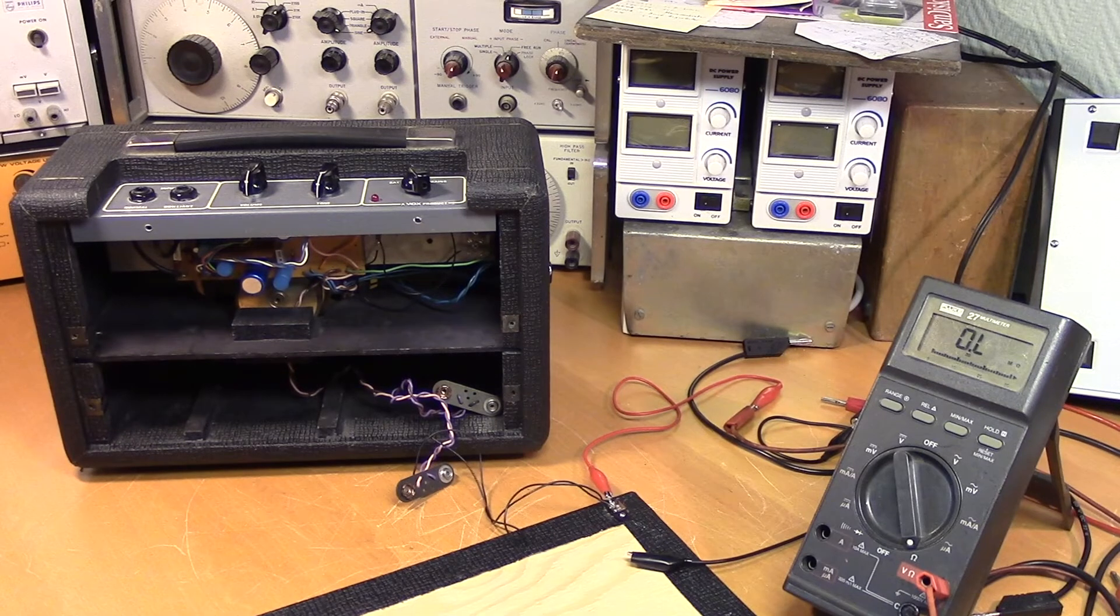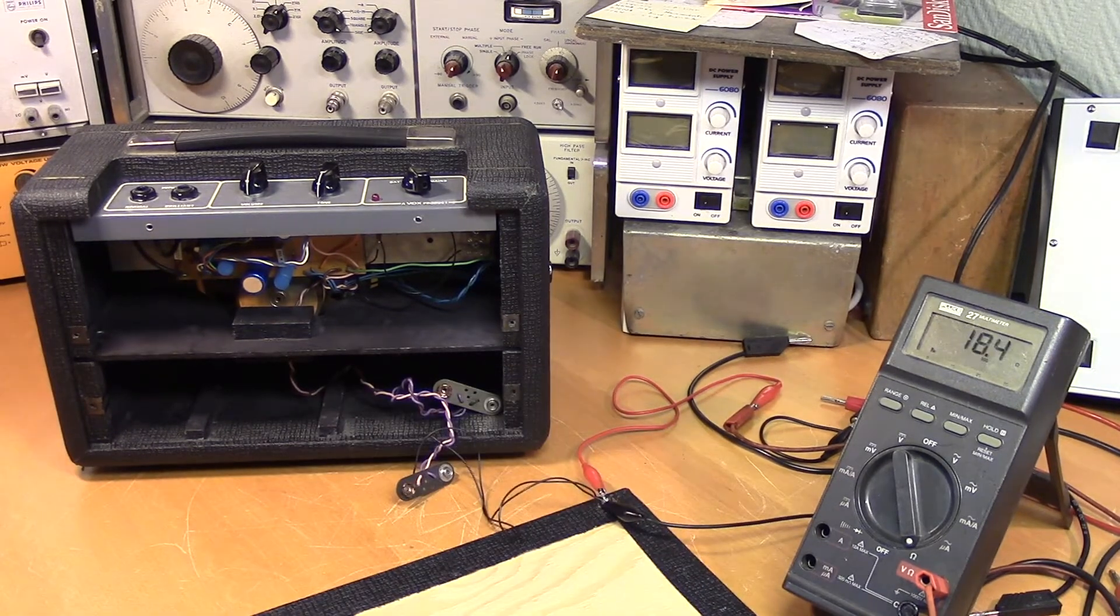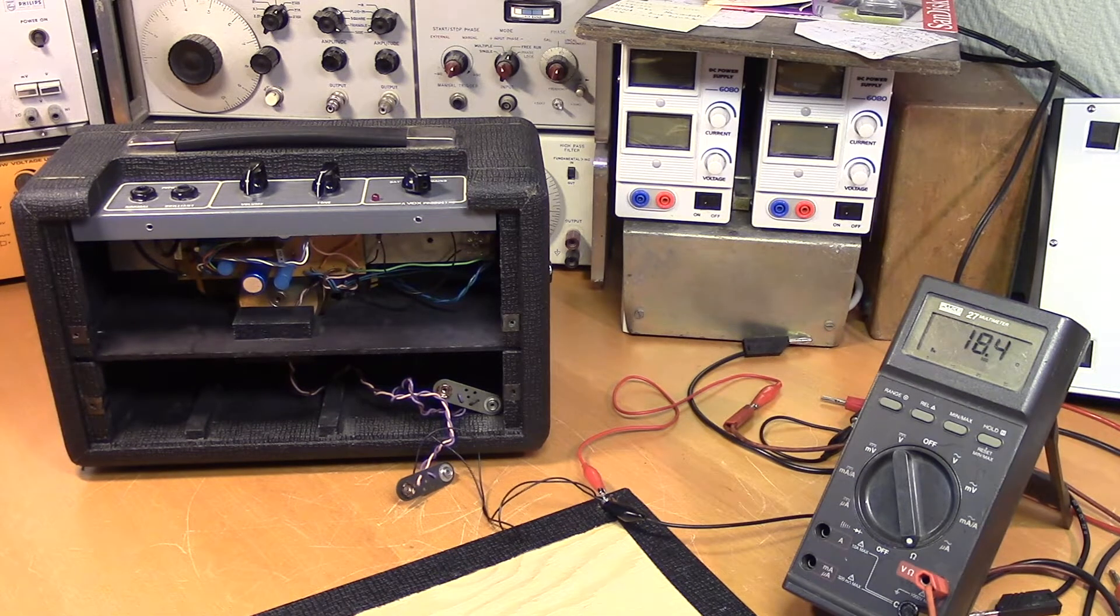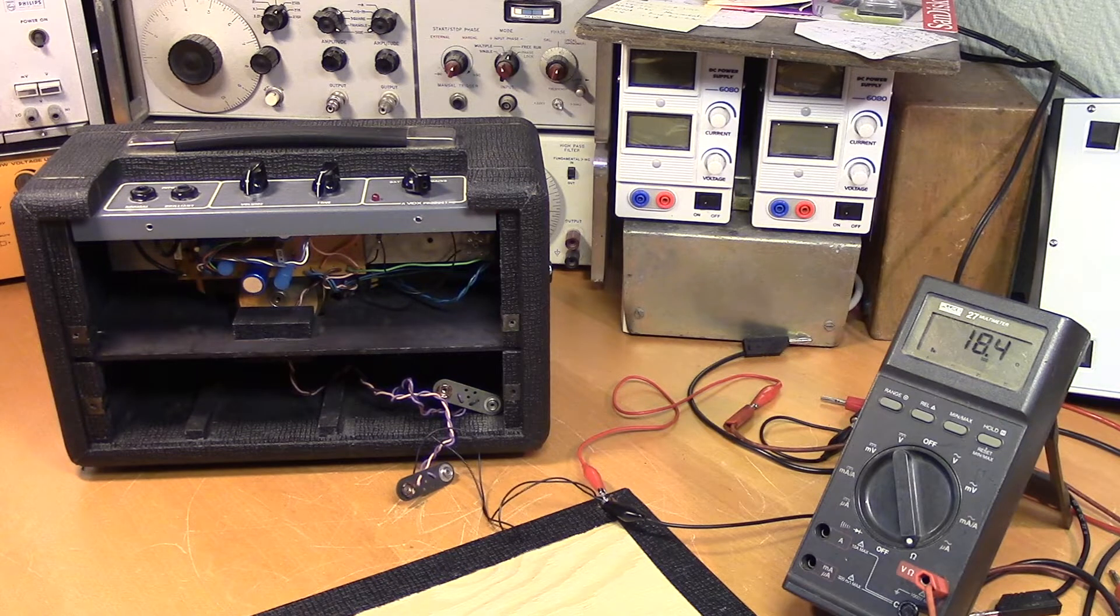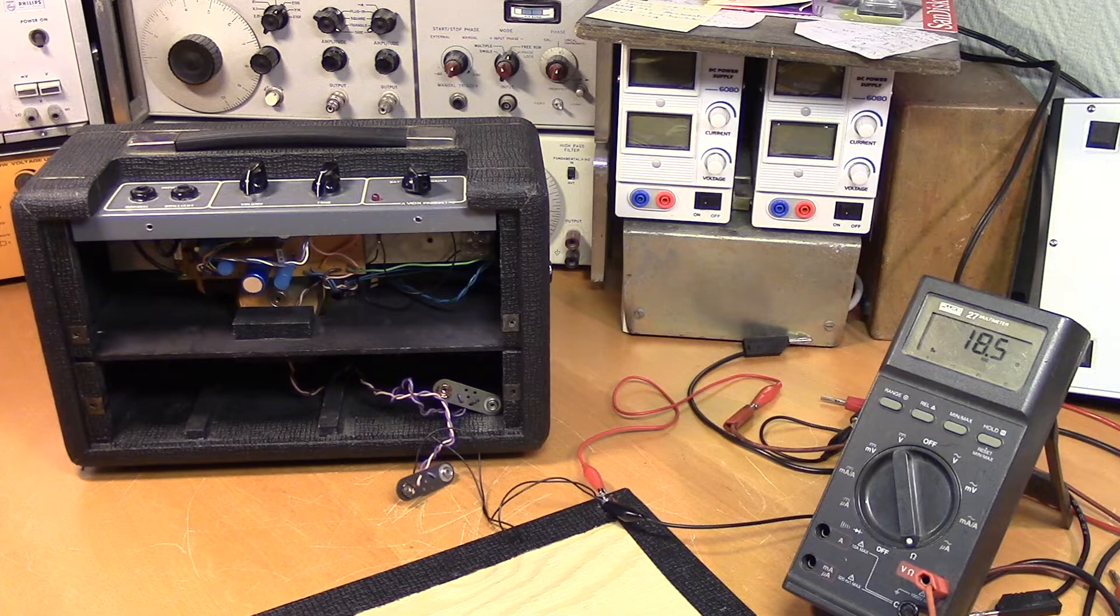So it's still pulling quite a lot of current. We're measuring on the power supply input. We get a resistive value of 18.5 ohms, which is a lot less than it should be. So I think we'll detach the PCB so we get a better view of what components might be causing this.